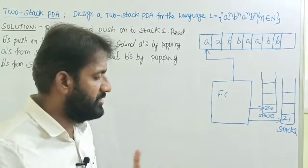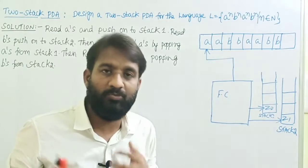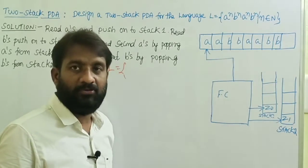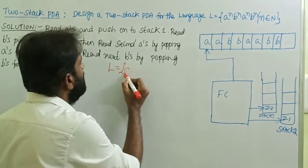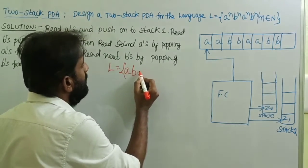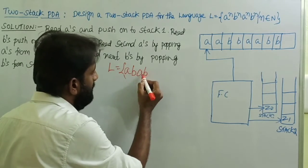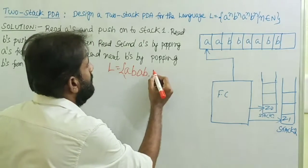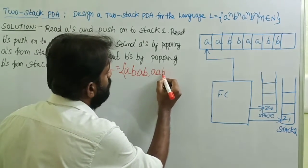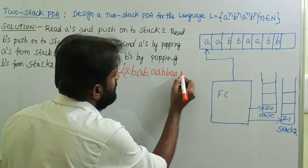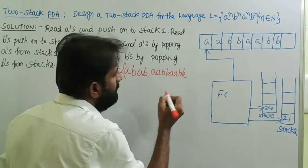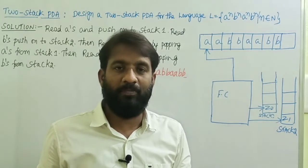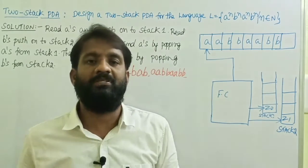Before discussing the logic, let me explain the possible strings over this language. If n equals 1, there is a single 'a' followed by a single 'b', followed by a single 'a', single 'b' — that is 'abab'. If n equals 2, there are two a's followed by two b's followed by two a's followed by two b's. If n equals 3, there are three a's followed by three b's followed by three a's followed by three b's, and so on.